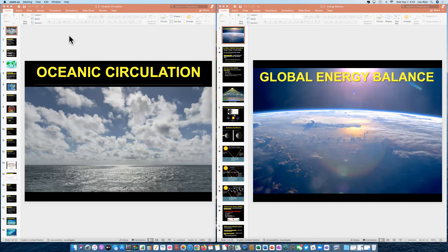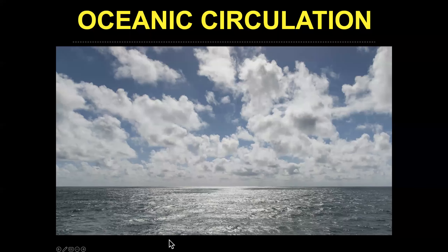We're going to begin with two lessons today: oceanic circulation and the global energy balance. We'll begin with oceanic circulation first. The oceans are critical to managing weather and climate. Think about a hurricane — its genesis, energy, moisture, heat, and wind energy are all derived from hot ocean water. These two slide sets are not particularly long, so let's get into oceanic circulation.